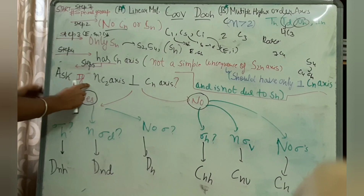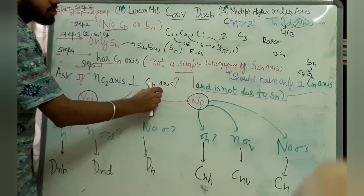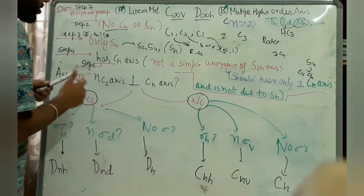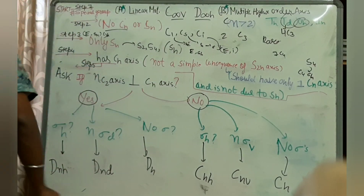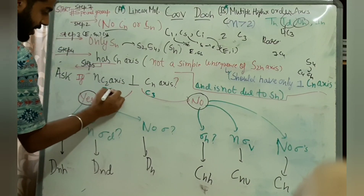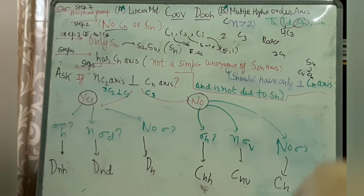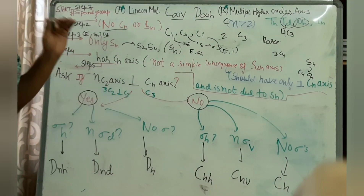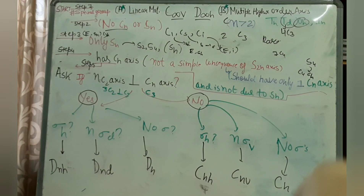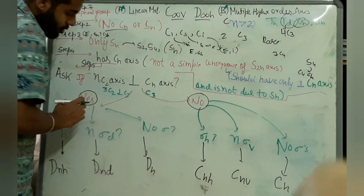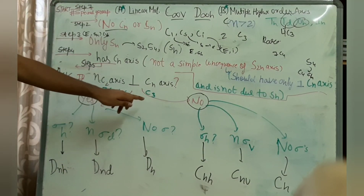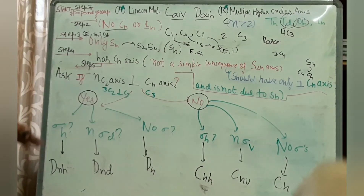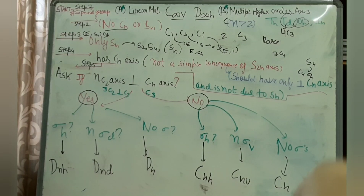If step four applies, you then ask: does my molecule have n number of C2s perpendicular to the principal Cn axis? For example, if the principal axis is C3 and there are three C2s perpendicular to it — if the answer is yes, you go one way; if no, you go another way.